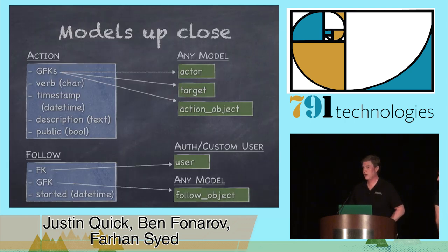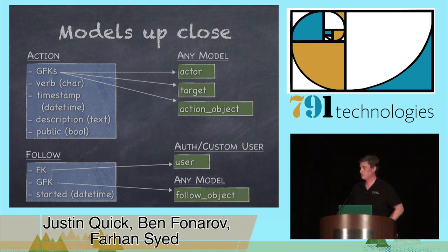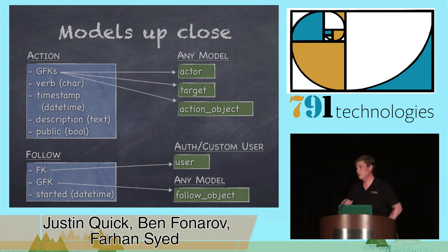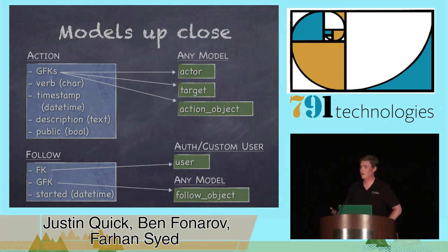Behind the scenes, it uses two models to accomplish everything. The main action model has generic foreign keys named actor, target, and action object that can point to any object in your Django database — it doesn't have to be a user. It also has descriptive meta information. The second model is follow. It has a foreign key to your user — whether that's Django auth user or a custom user — and then a generic foreign key pointing to any other entity that you'd like to follow. It doesn't have to be a user; it could be anything else, and it maintains that relationship in the database.